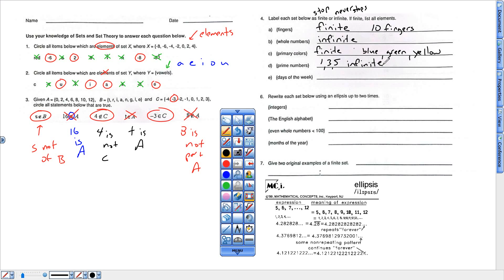And then days of the week, I would say there's seven of them. I guess you could list all the days, Monday, Tuesday. I guess you could list them all.